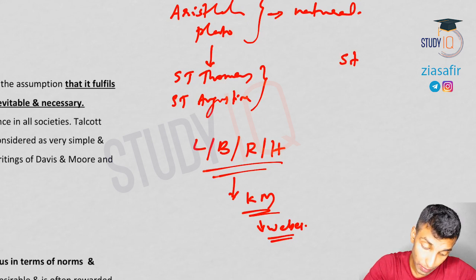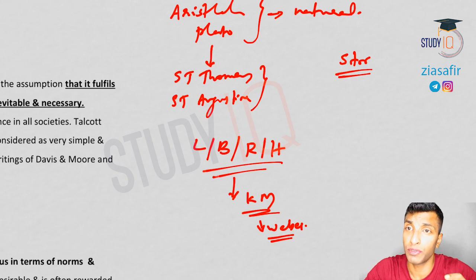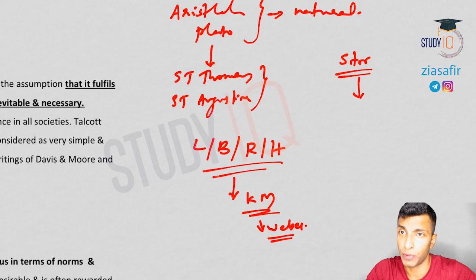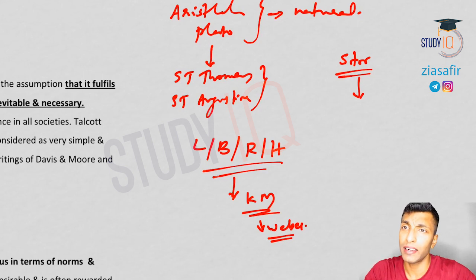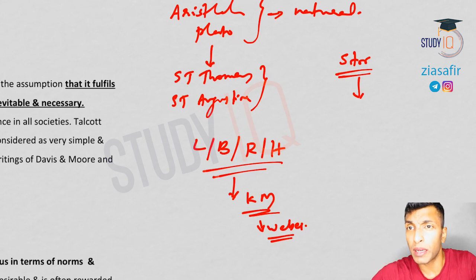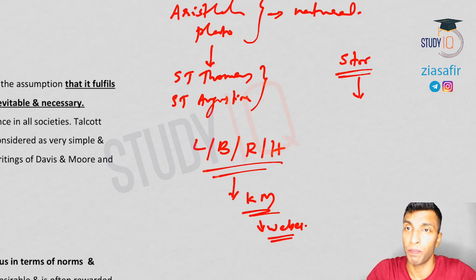Then we talked about the structural functional approach, which is exactly what we are going to do today. We will talk about Parsons, Davis and Moore, and W.L. Warner. Then there are approaches where people try to combine the Weberian and Marxian approaches — in Eric Wright's writings, you can see a combination of Marx and Weber. Later we understood that postmodernists say inequalities are at the individual level and it is very difficult to identify patterns in a very complicated and complex society. People are becoming more individualistic, so inequality is also individualistic now, and stratas are diffusing.